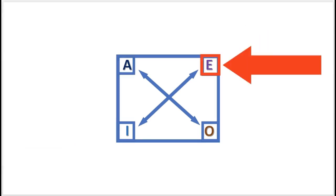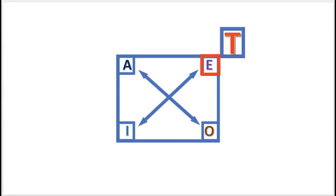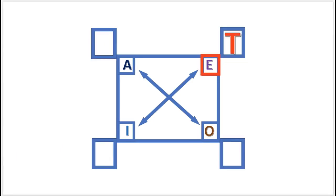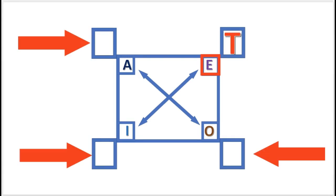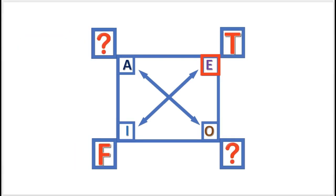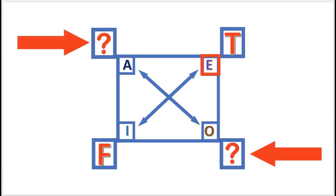Next practice problem: if the E proposition is true, what is the truth value of the other propositions? I is false. A and O are undetermined.